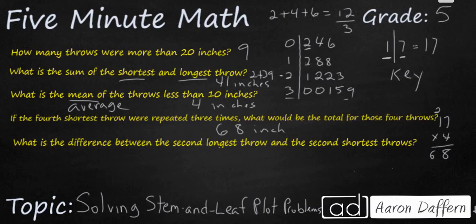And now what is the difference? That means subtract between the second longest throw and the second shortest throw. Well the second longest throw is right here, that's going to be 35 inches. Second shortest is right here, that's going to be 4 inches. So 35 minus 4, that's going to be 31 inches.